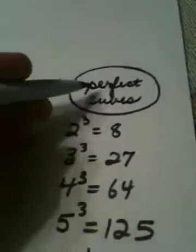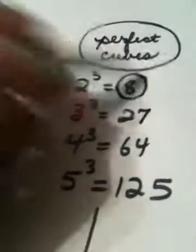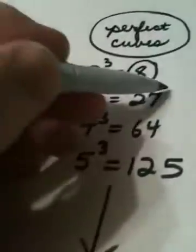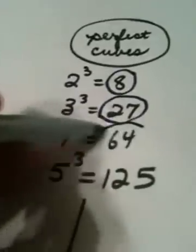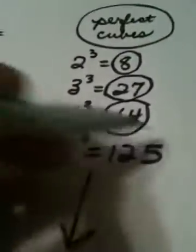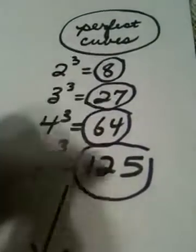When I look for perfect cubes, 2 to the 3rd is 8, so 8 is a perfect cube. 3 to the 3rd is 27. 4 to the 3rd is 64. 5 to the 3rd is 125. So you can create this list very easily.